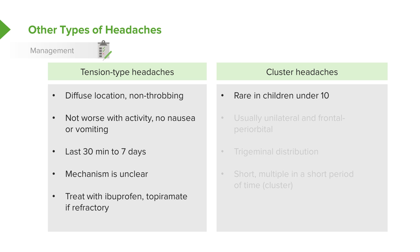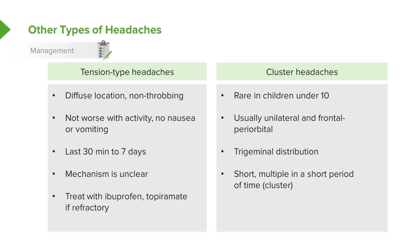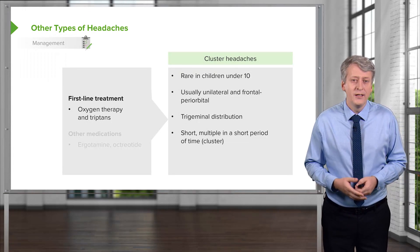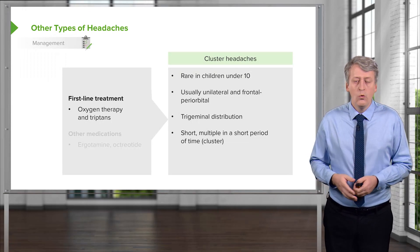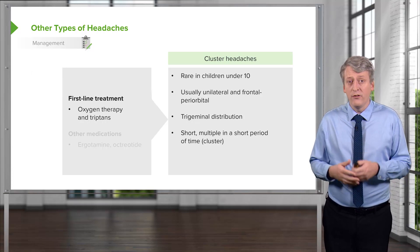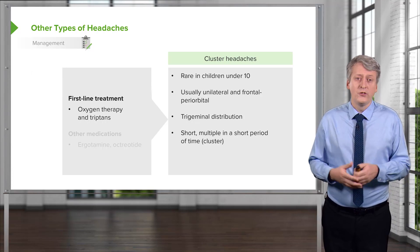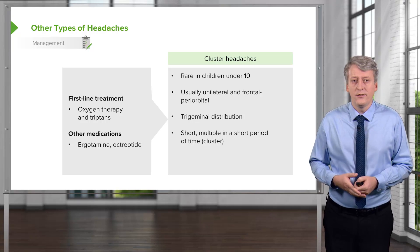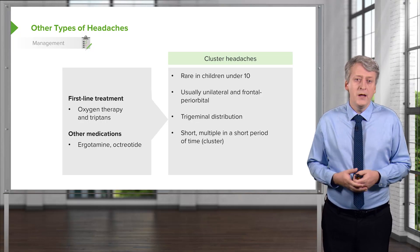Cluster headaches are rare in children under 10. They're usually unilateral and frontal or periorbital, often with a trigeminal nerve distribution. They are usually short but occur in multiple episodes over and over again in a short period of time — hence the name cluster headaches. The first-line therapy, interestingly, is 100% oxygen therapy. Families are often sent home with oxygen tanks. Triptans may also be useful, and other medicines include ergotamine and octreotide.